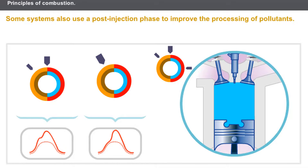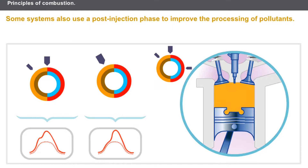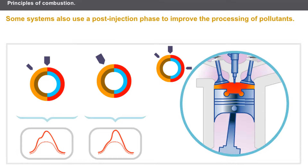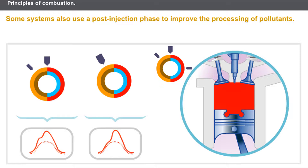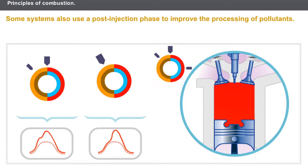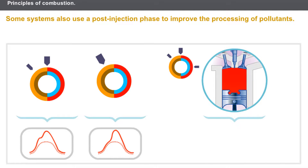Some systems also use a post-injection phase to improve the treatment of pollutants. A small quantity of diesel fuel is injected after the main injection phase at the end of the power stroke. Unburnt diesel fuel is evacuated along with the exhaust gases and is used by the particle filter systems.